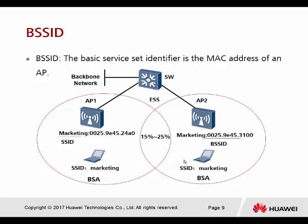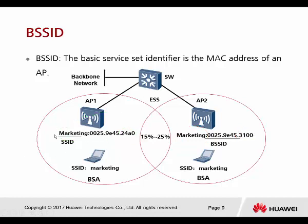The next is BSSID. BSSID is the basic service set identifier — it's the MAC address of an AP. Every single AP will have its own MAC address. Right here we're giving you the example: we have two APs with the same SSID. The first is broadcasting from AP number one using BSSID 2480, while AP number two has the same SSID but a different BSSID of 310. This is how the PC knows which AP it's actually connected to — by using the BSSID to recognize it.